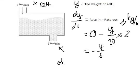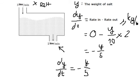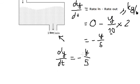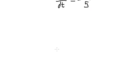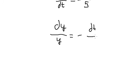So we have dy/dt equals negative y over 5. We separate variables by putting y on the left side and dt on the right side, then integrate both sides.